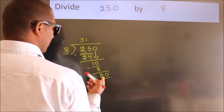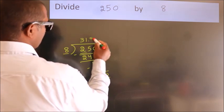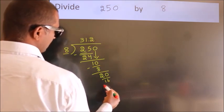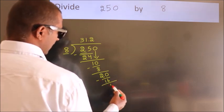A number close to 20 in the 8 table is 8 twos, 16. Now we subtract. We get 4.